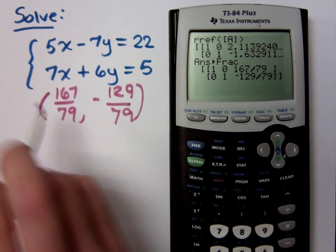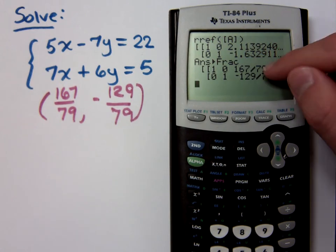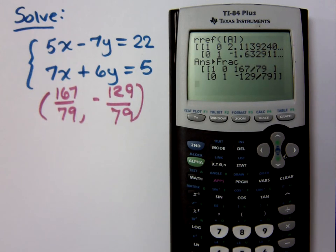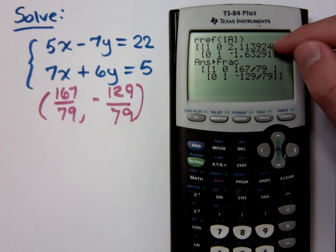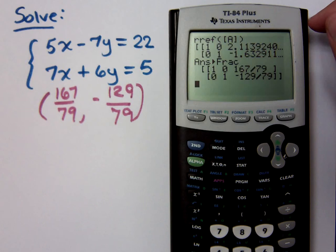Is it going to automatically find a common denominator between the two and always present it that way, or...? It takes this decimal and it converts it to a fraction. Say again? It takes whatever this decimal representation is and it converts it to... Right, but what if that had been 129.78, would it...?